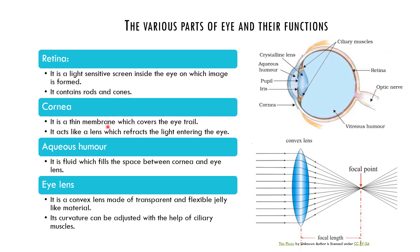Next is the cornea. It is a thin membrane which covers the eyeball. It acts like a lens which refracts the light entering the eye. Whatever light enters the eye gets refracted at the cornea, and the image forms on the retina. Refraction is the bending of light when it moves from one medium to another medium.